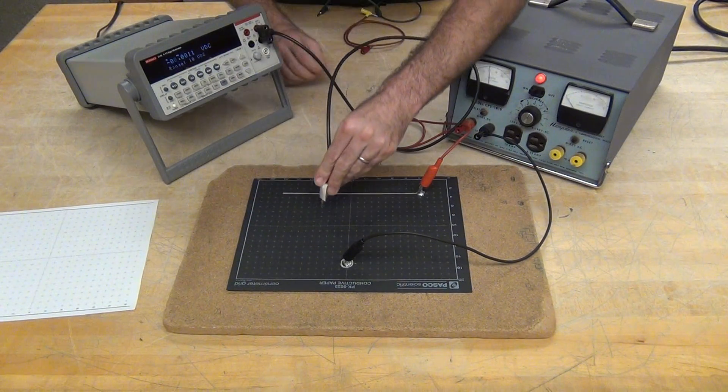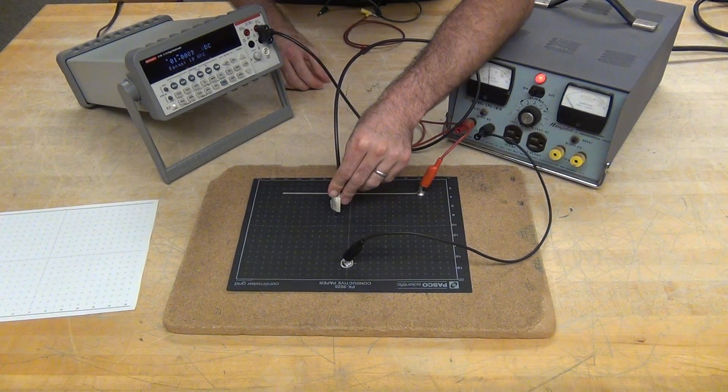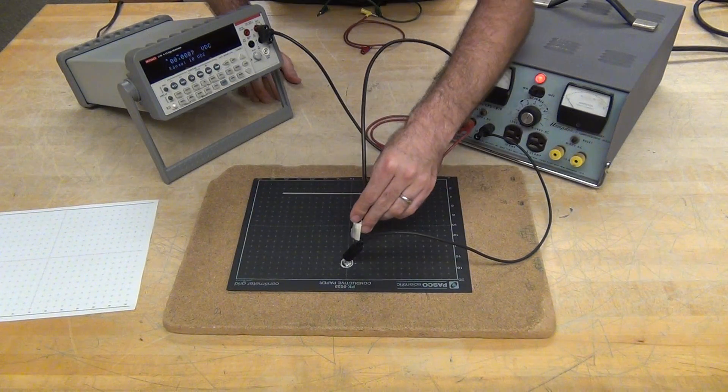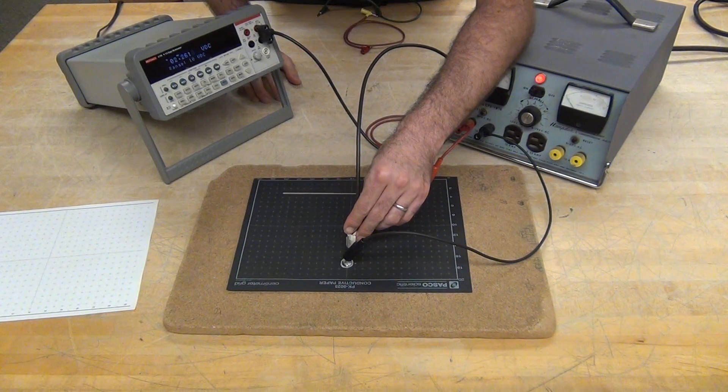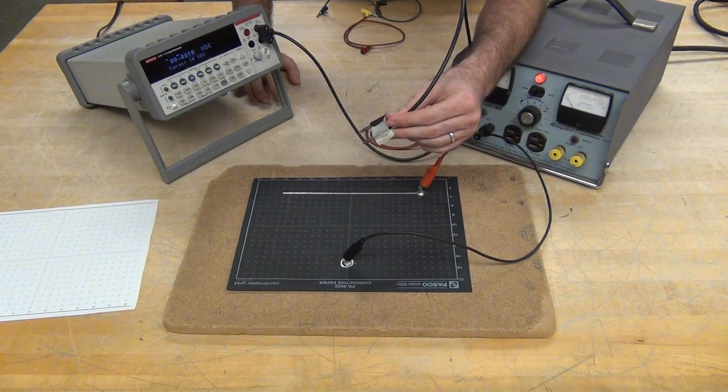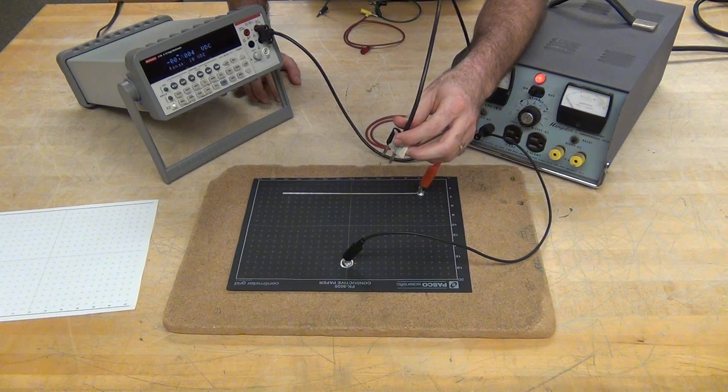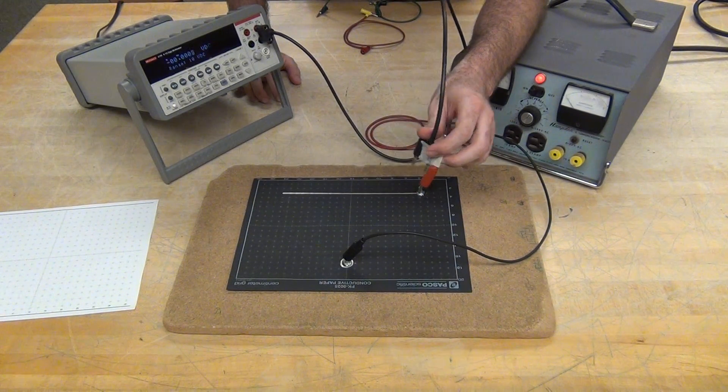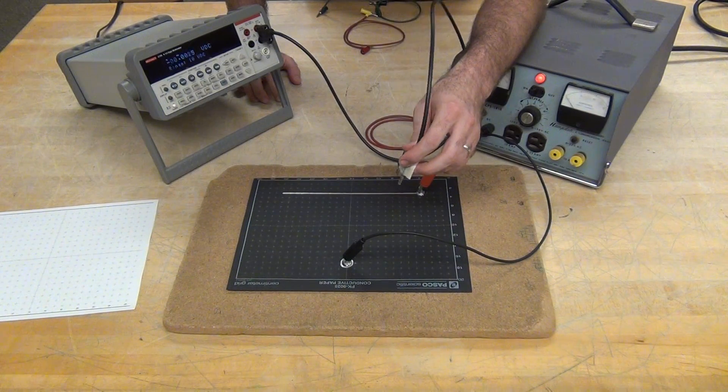If I measure there, I'd get 1.0 volts. If I measure up here, I get 2.2 volts. We're going to step through the greatest change in potential.